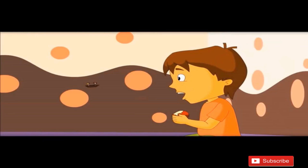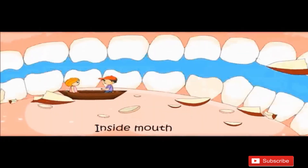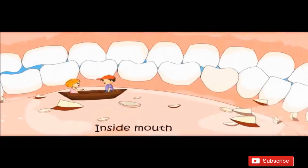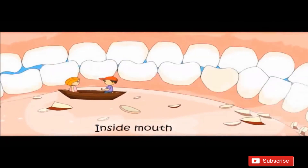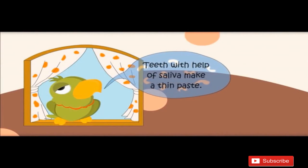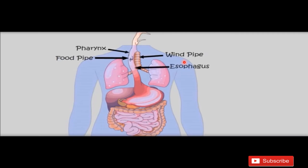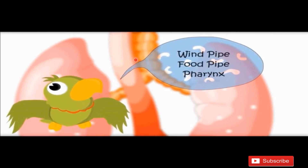Now summarizing: food enters our body in the mouth where grinding of food occurs. Our teeth help in grinding food — the large particles of food are converted into smaller ones. Teeth, with the help of saliva, make a thin paste. Food then travels from the mouth to the pharynx, the wide short tube also called the food pipe. Adjacent to the food pipe, the wind pipe is also present which opens into the lungs. From the pharynx, food transfers into the esophagus.